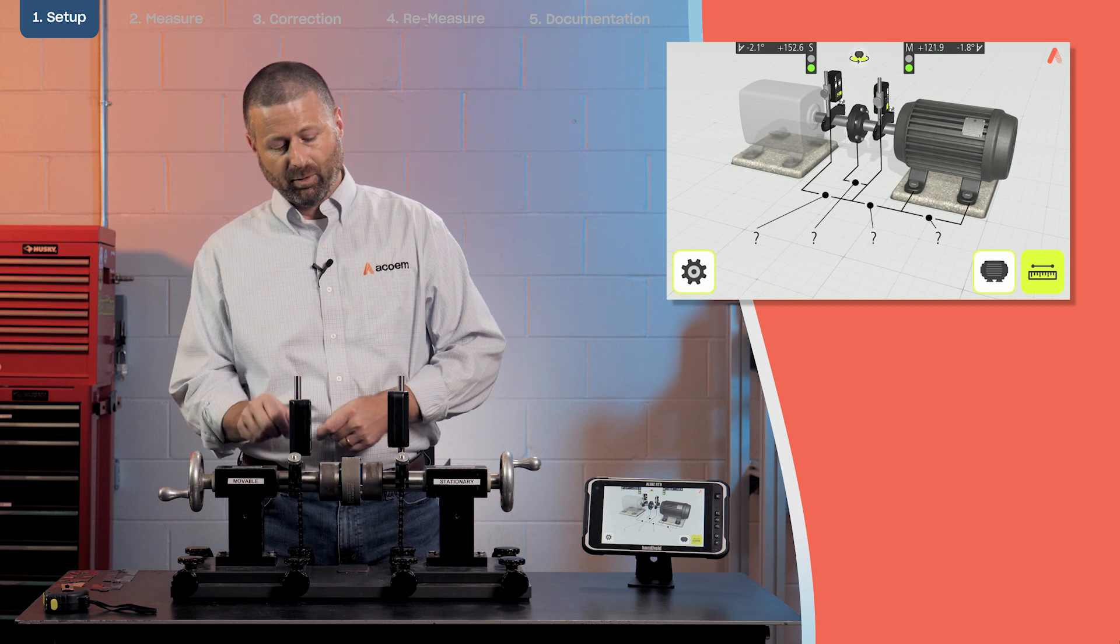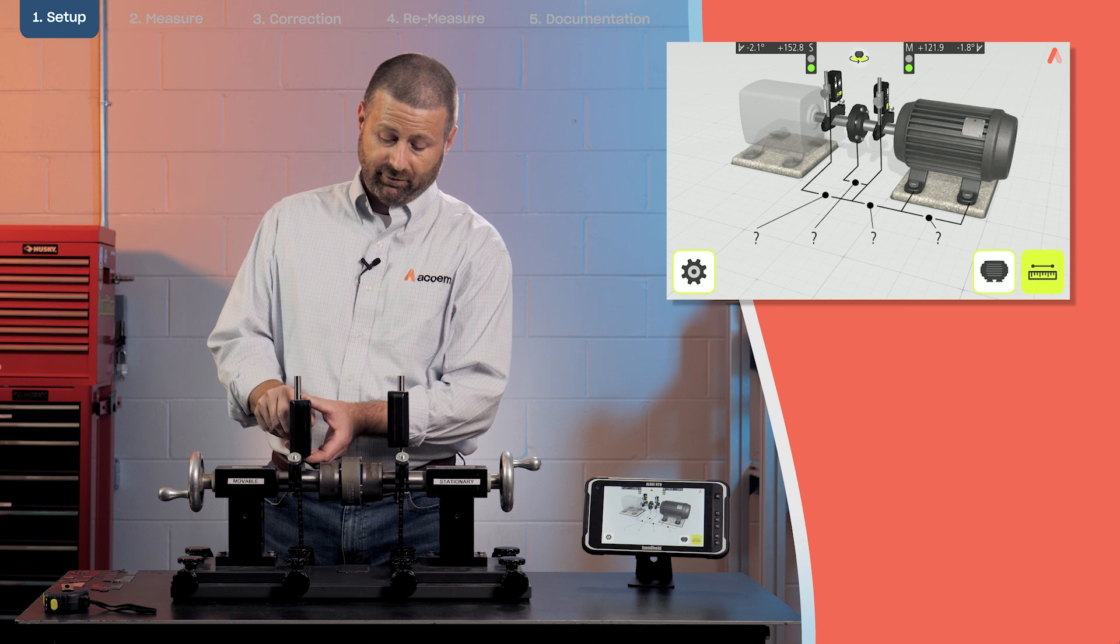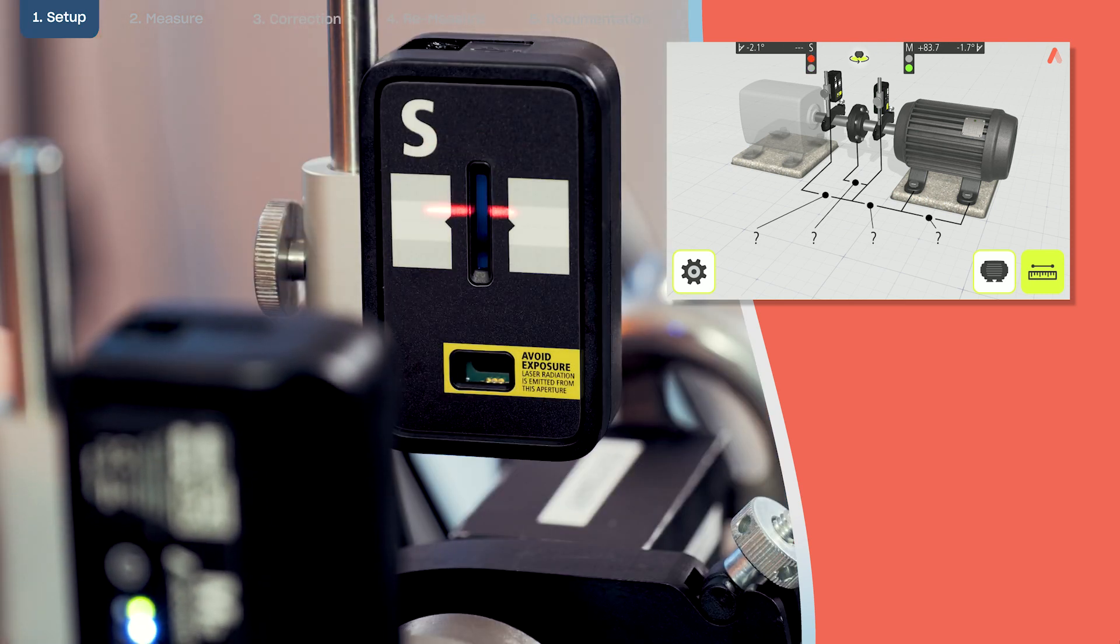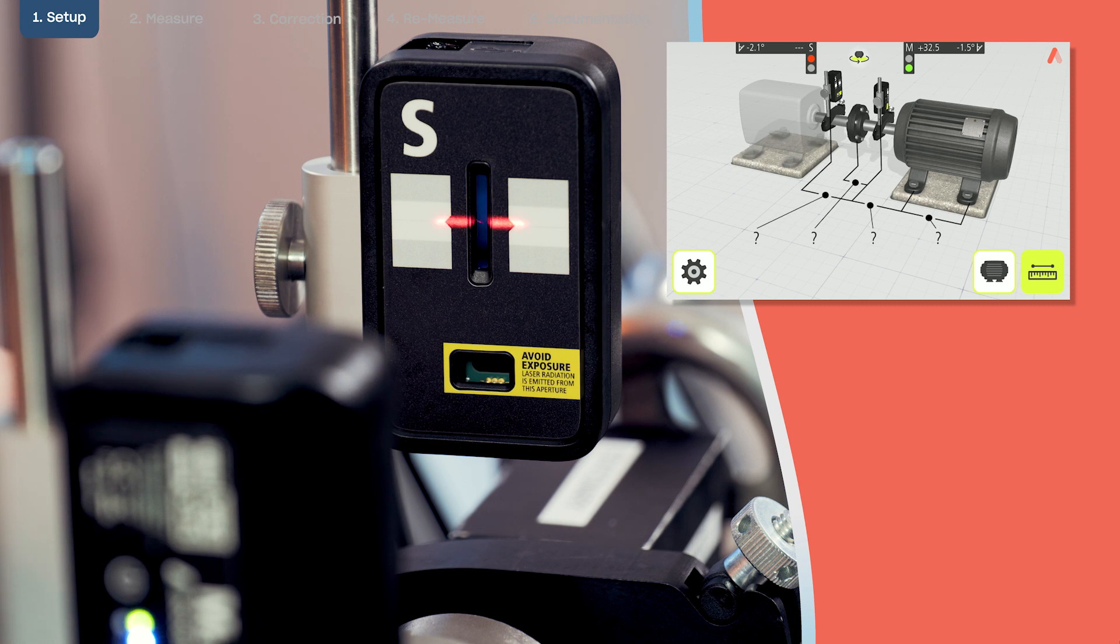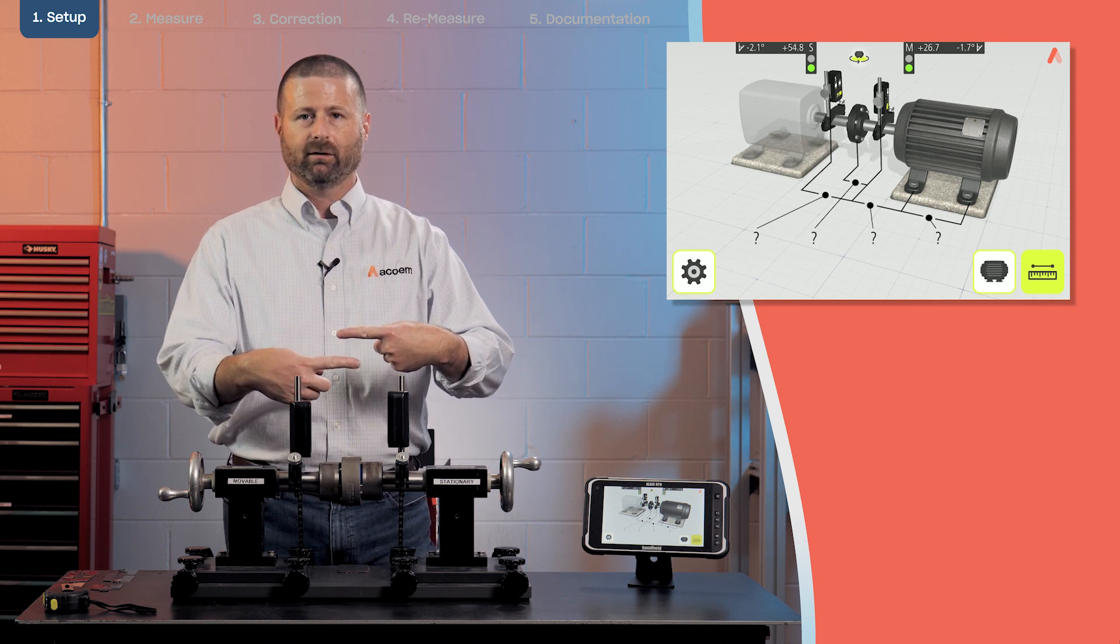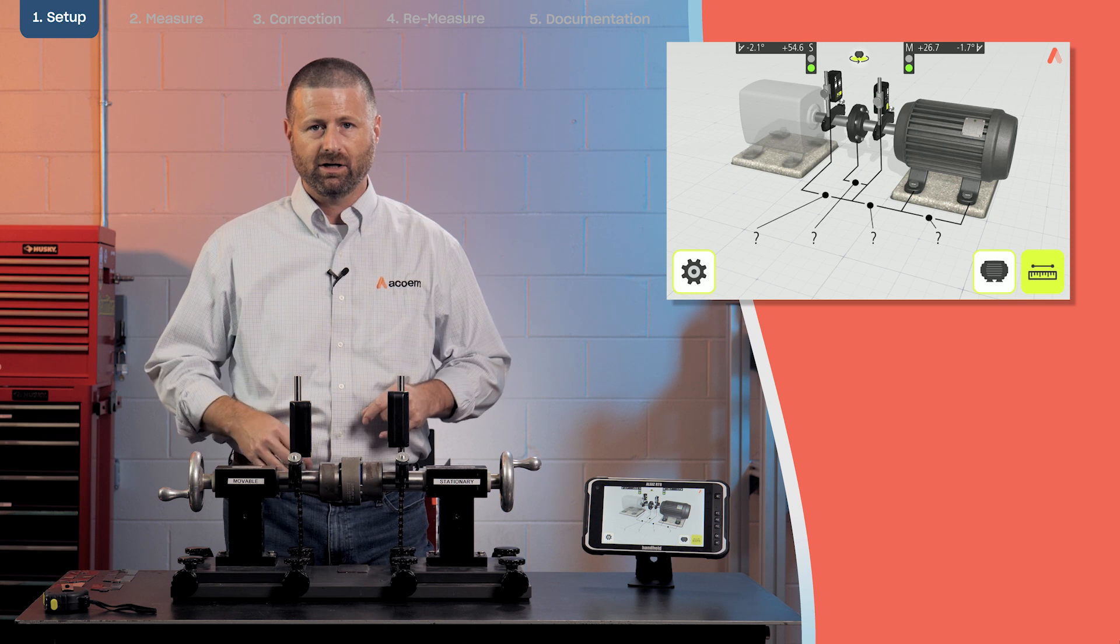In that setup what we need to do is aim the laser. It is a line laser so it is very easy to aim. We do the aiming by moving one sensor or both sensors up and down on the post. So now I have each of my laser lines in the center of each sensor.